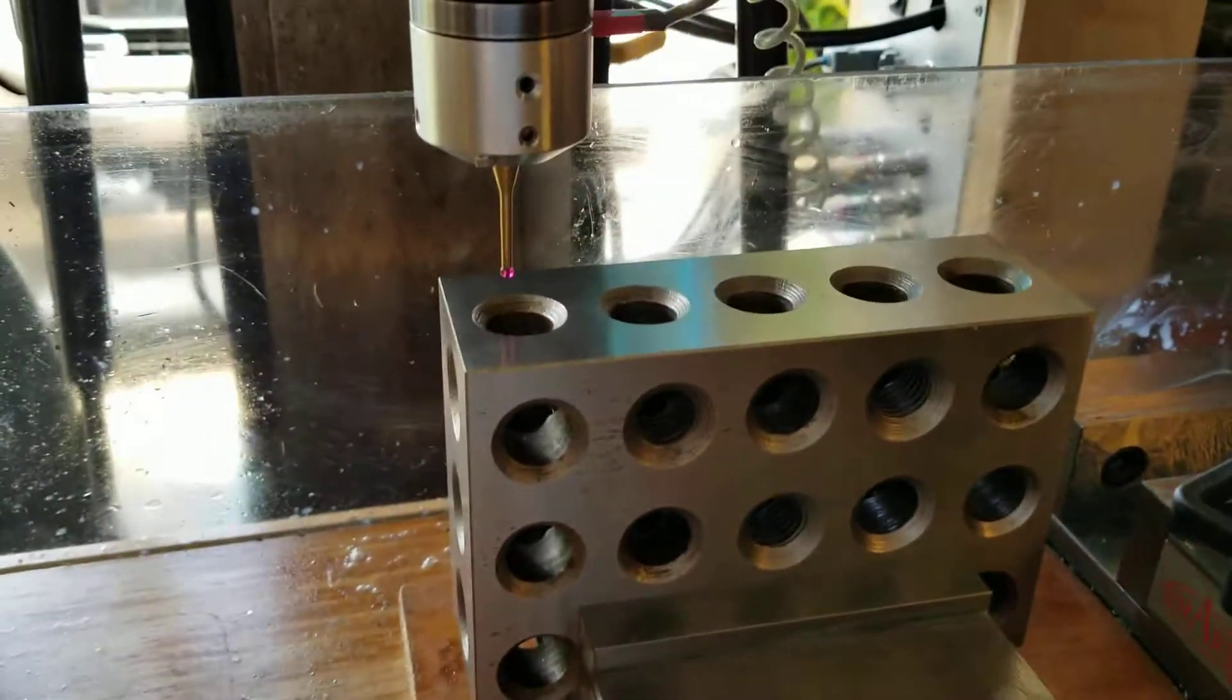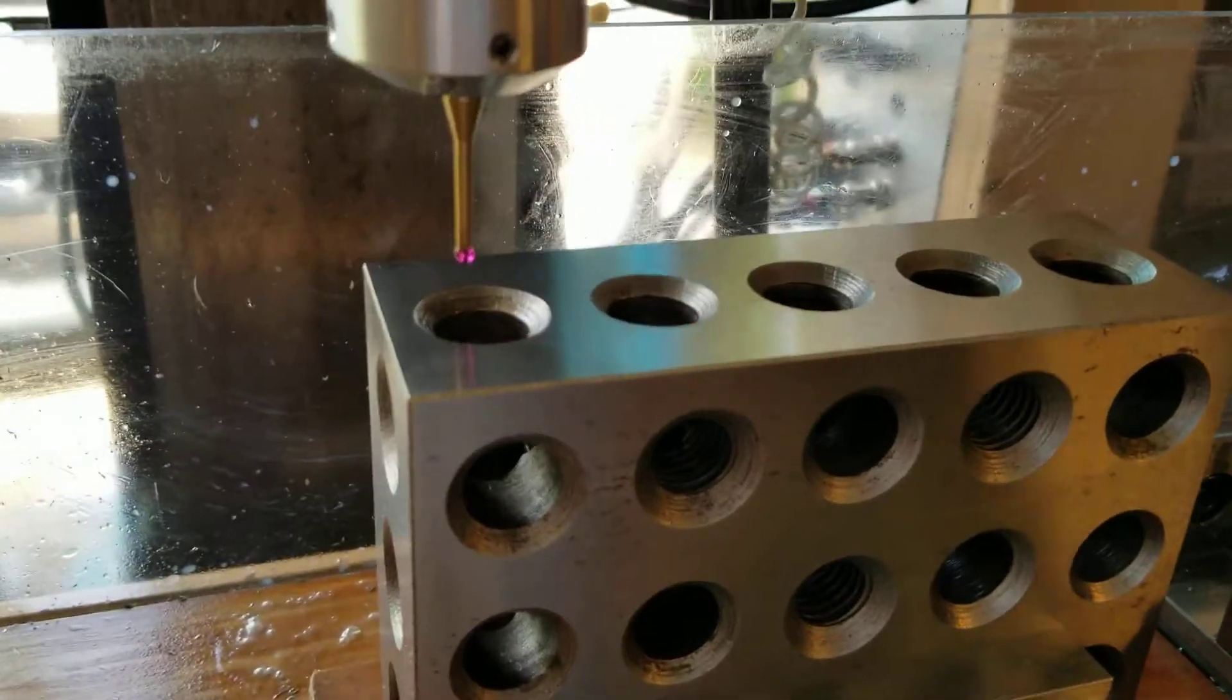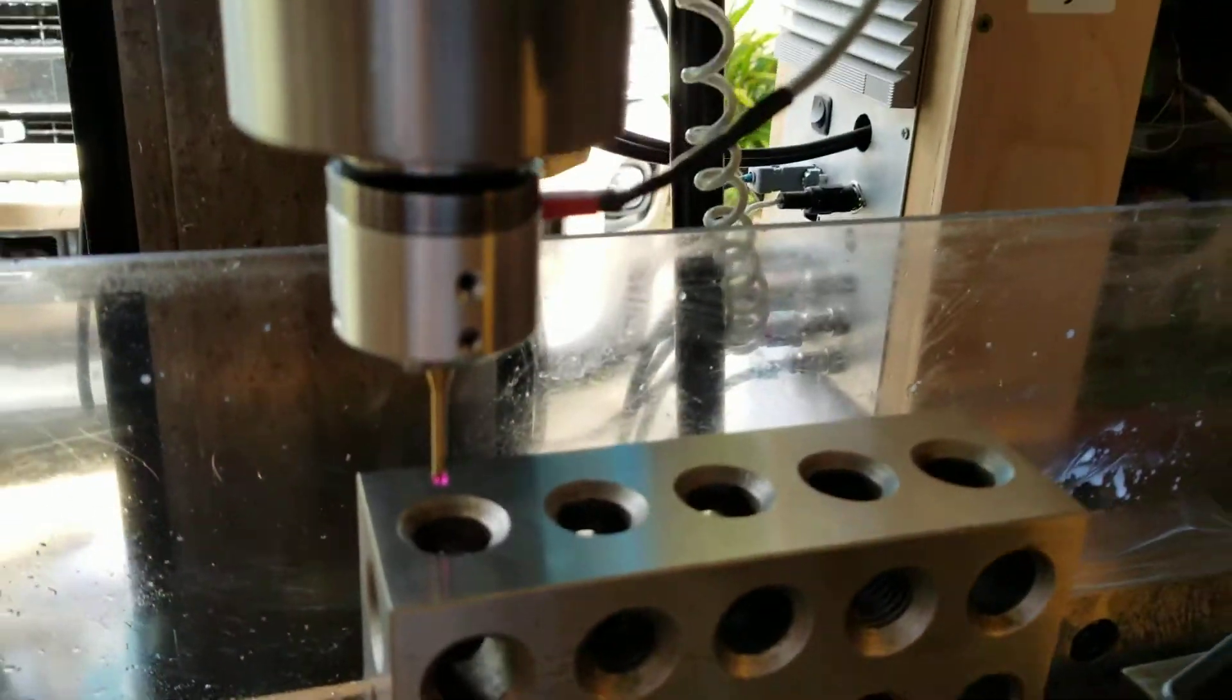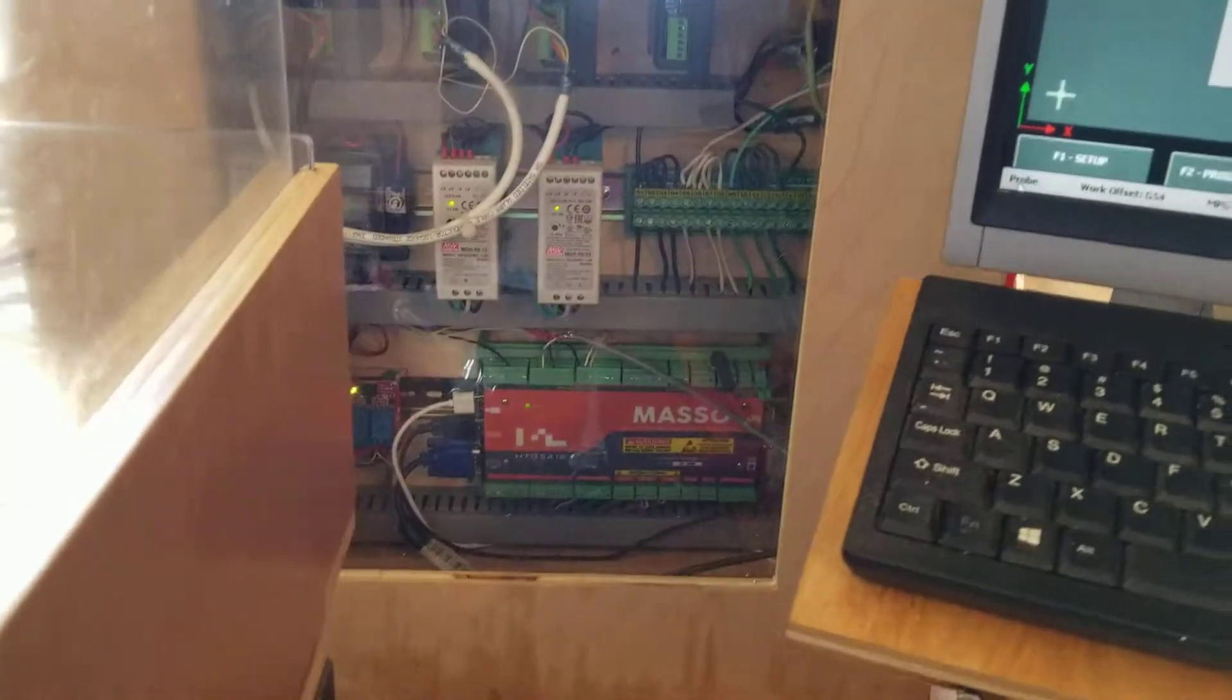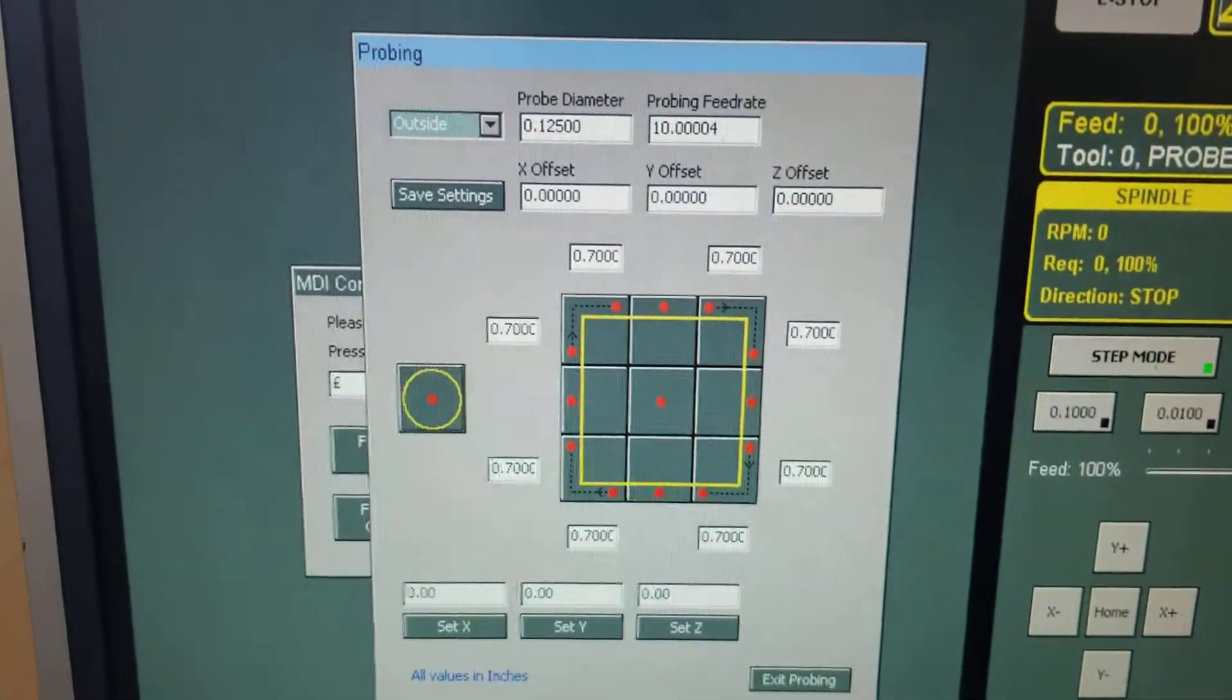All right guys, so this time we're going to probe and find the center of the hole using the Drutronics probe hooked into the Masso controller and using the Masso probing menu.